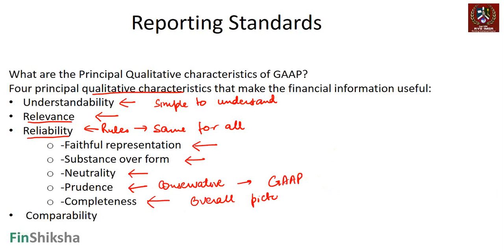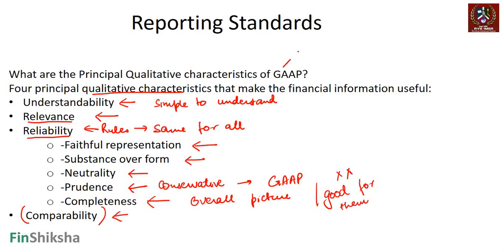There is also completeness — all-round data points are captured in reporting standards. Some companies would prefer to report only data points that look good for them, but that is not allowed. You have to give complete information — everything good and bad. The primary objective is that you can compare companies across the same geography using a consistent set of generally accepted accounting principles.